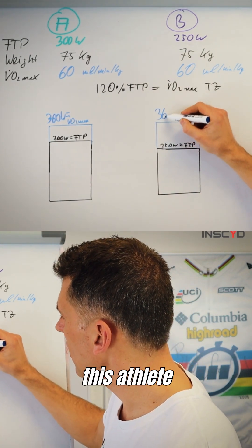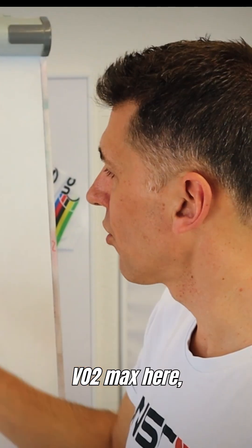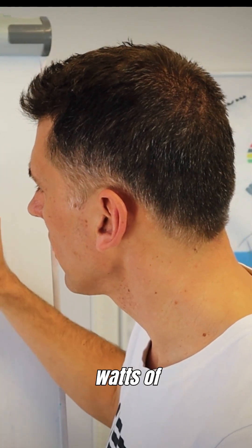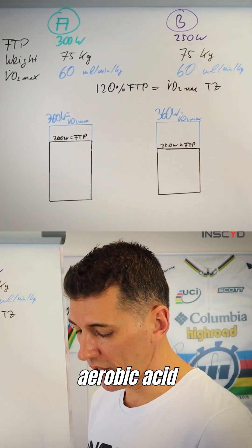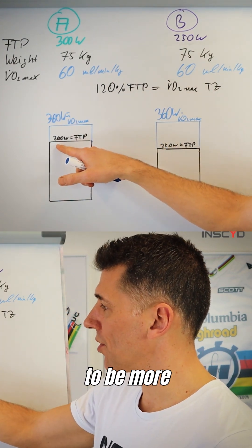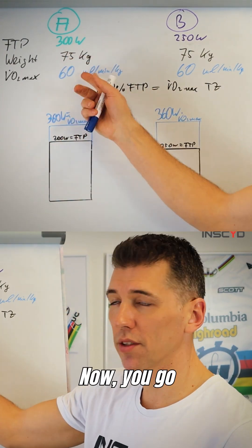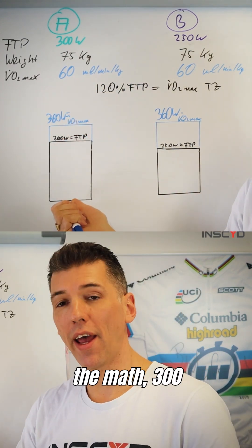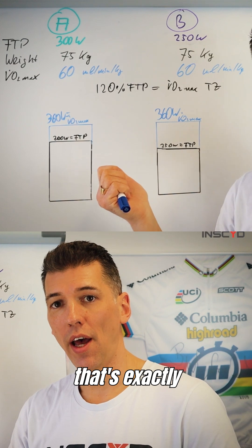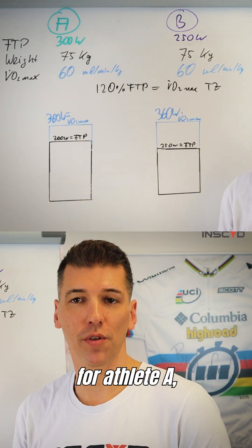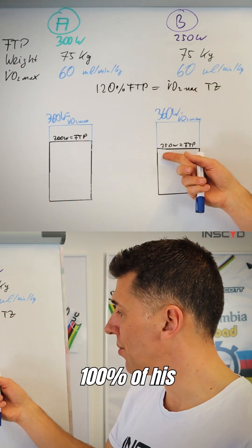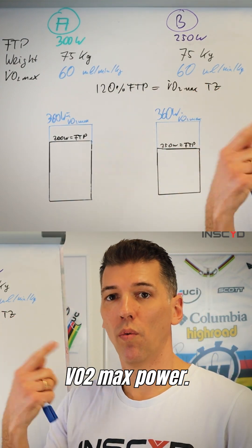Now because this athlete has the same VO2max here, he also has the same 360 watts of maximum aerobic capacity or maximum aerobic power, to be more precise. Now you go 120% of FTP and you can easily do the math. 300 watts, 120%, that's exactly 360 watts. So for Athlete A, this athlete actually exercises at 100% of his VO2max power.